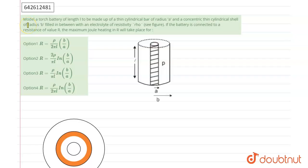According to question, model of a torch battery of length L made of a cylindrical bar of radius A and concentric cylindrical shell of radius B and filled between with an electrolyte of resistivity rho. Battery is connected to a resistance of R, external resistance is R. So we have to find the maximum Joule heating in R.